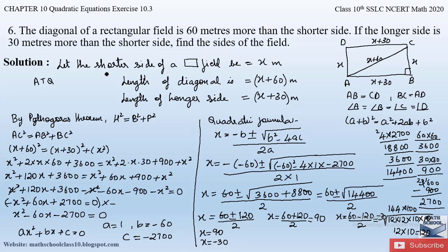Since x represents the shorter side of the rectangular field, any measuring quantity cannot be negative, so we discard x = −30 and take x = 90. Therefore the shorter side is 90 meters, and the longer side is x + 30 = 90 + 30 = 120 meters.